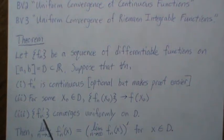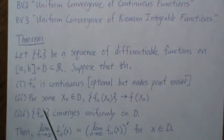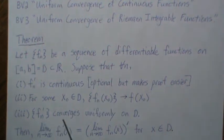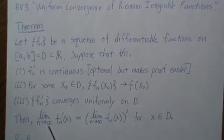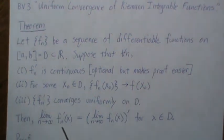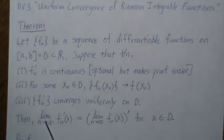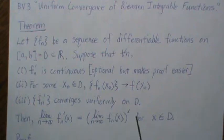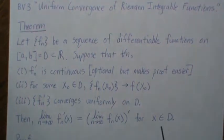The sequence f_n prime, or this is the derivative of our f_n, it converges uniformly on D. Then the limit of our derivative of our sequence is equal to the derivative of the limit. So basically, we can pass that limit under the derivative. This is for all x ∈ D.